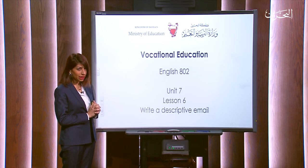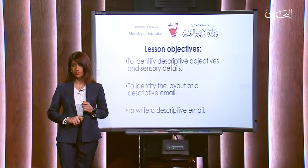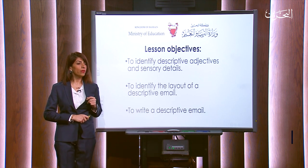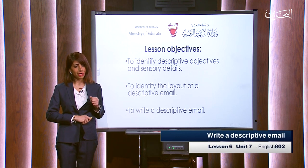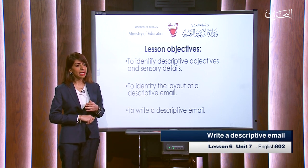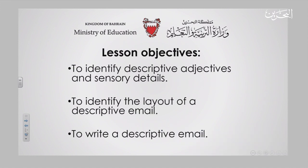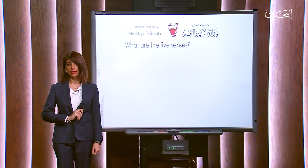Hello, my dear students. I would like to welcome you to English 802 for vocational education. We're going to start today with Unit 7, Lesson 6: Write a Descriptive Email. Before I start the lesson, we're going to identify three main objectives for today. The first one is to identify descriptive adjectives and sensory details, the second one is to identify the layout of a descriptive email, and then we are going to write a descriptive email.